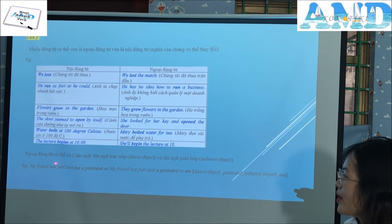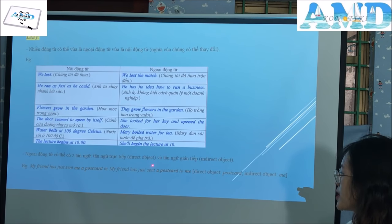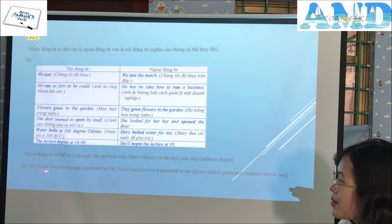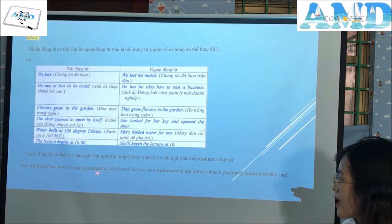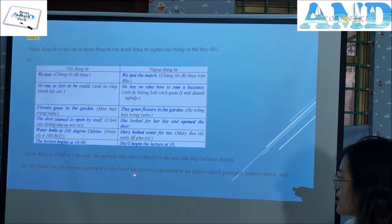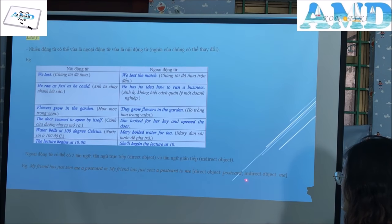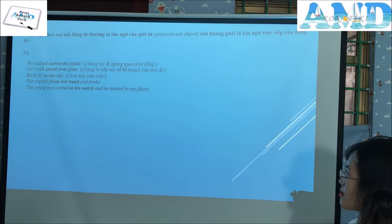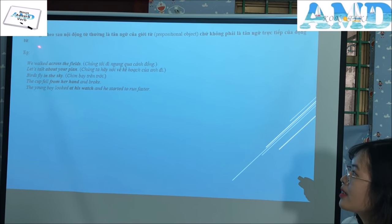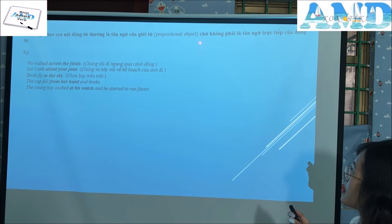Next note: a transitive verb can have two objects — a direct object and an indirect object. For example: 'My friend has just sent me a postcard.' Or: 'My friend has just sent a postcard to me.' Here, the direct object is 'postcard' and the indirect object is 'me.' Also note: a noun following a preposition is usually the prepositional object, not the direct object of the verb. For example: 'We walked across the fields' — here 'the fields' is the object of the preposition, and 'across the fields' is an adverbial.